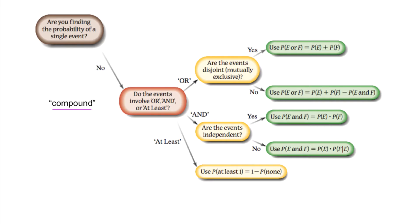You see the rest of the diagram as it splits into those three categories. Just like the question of equally likely outcomes, after recognizing more than one single event in a probability question, we want — like second nature — to be asking ourselves: is this an OR situation, an AND situation, or an AT LEAST situation?